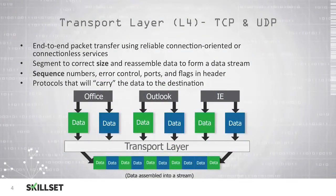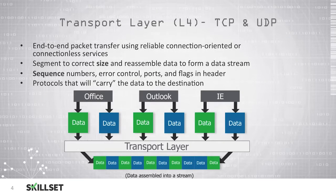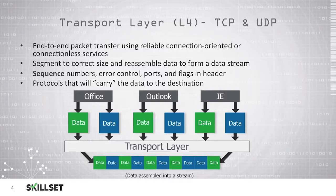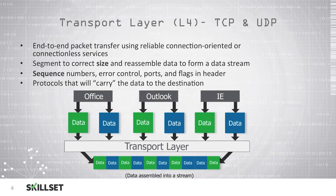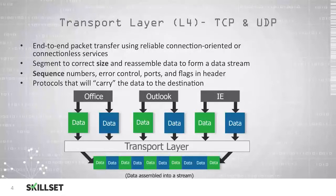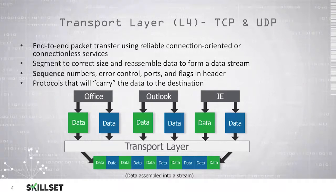At the transport layer, or layer 4, we have our Transmission Control Protocol and User Datagram Protocol. These protocols are concerned with transferring packets from end to end, or computer to computer, using either a reliable connection-oriented protocol such as TCP or a connectionless service UDP. At this layer they segment the data to correct packet sizes, and when receiving data on the other side it will be reassembled in order to form a data stream.